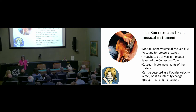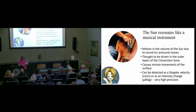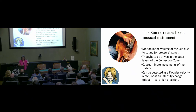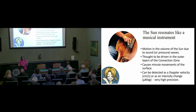We have motion in the volume of the Sun due to sound waves — pressure is the restoring force — thought to be driven in the outer layers of the convection zone, causing minute movements of the surface. It can be detected as a Doppler velocity or as an intensity change. Intensity change from the ground is really tricky. Most people working from the ground will work with Doppler velocity — a few centimetres per second in the speed of light, parts in ten to the nine or ten. This is precision spectroscopy. If you're working in intensity, you're talking about micro-magnitudes — a millionth. It's not easy.